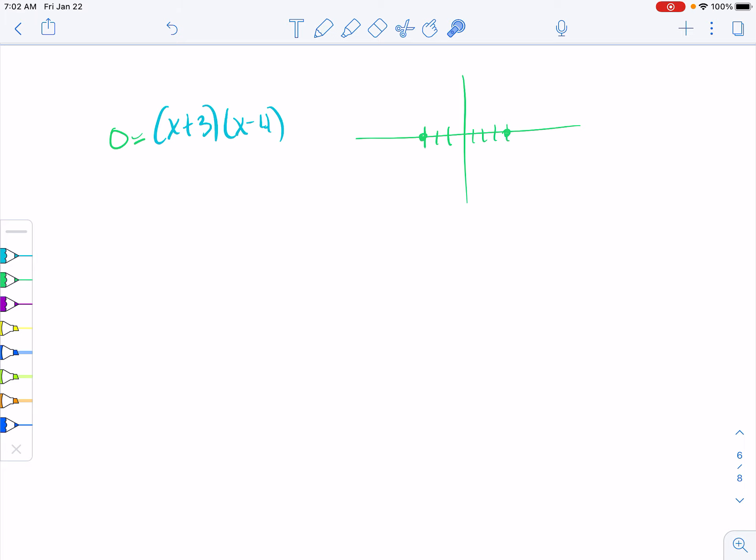There's this property called the zero-product property. In order to multiply to 0, one of these has to be 0. So I set each one equal to 0 and solve. Here, to get x by itself, I would subtract 3. Here, to get x by itself, I would add 4. So we get the x-intercepts of negative 3 and 4.